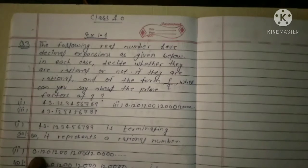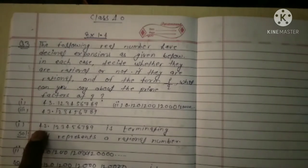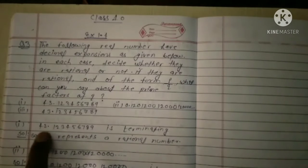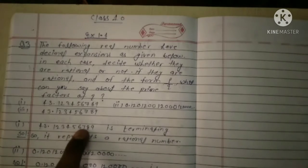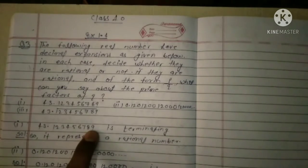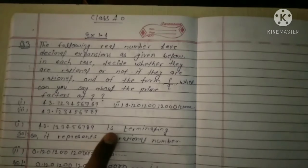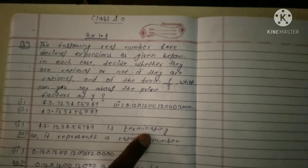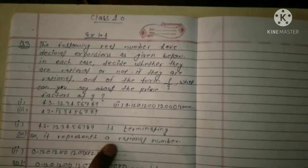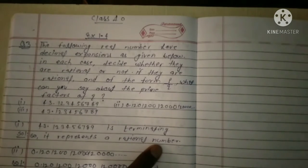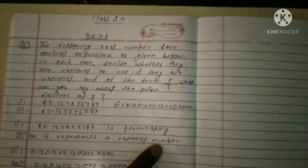First question: 43.123456789. The digits 1, 2, 3, 4, 5, 6, 7, 8, 9 - it's only up to this point, there's no repetition after this. So this is terminating. It represents a rational number. Any number in point form is rational, but it should not be infinite or have a bar on it.